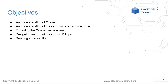Quorum is a private, distributed, ledger-based blockchain technology, which was started by J.P. Morgan. We will explore in detail what Quorum is, its ecosystem, consensus mechanisms, and Quorum transactions.